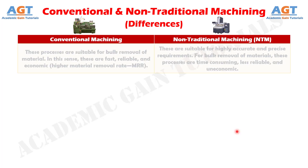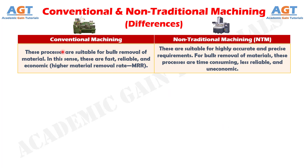Difference No. 8: Conventional machining processes are suitable for bulk removal of material. In this sense, these are fast, reliable, and economic, with a higher material removal rate, whereas non-traditional machining processes are suitable for highly accurate and precise requirements. For bulk removal of materials, these processes are time-consuming, less reliable, and uneconomic.